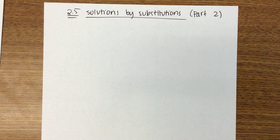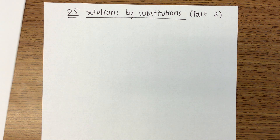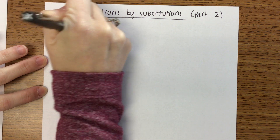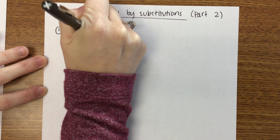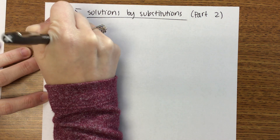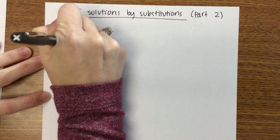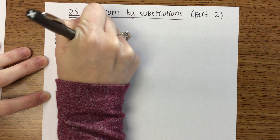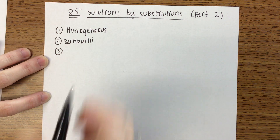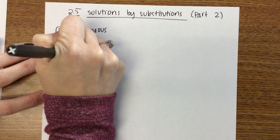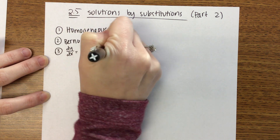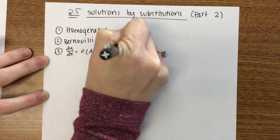Today we are finishing our notes on solutions through substitutions. There are three different types. The first one that we did on Friday is homogeneous, however you want to pronounce it. The second one that we're going to do today is Bernoulli equations. The third one is when you have dy/dx equals some function of ax plus by plus c.